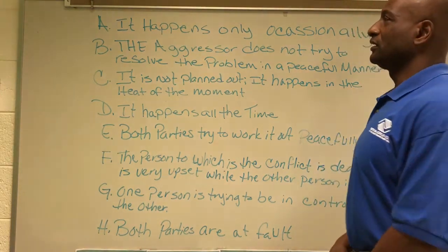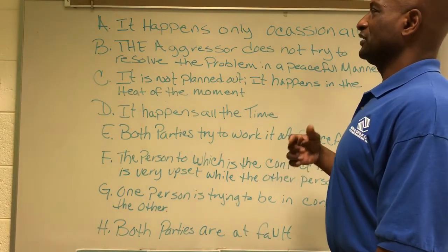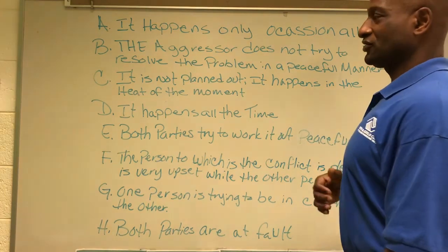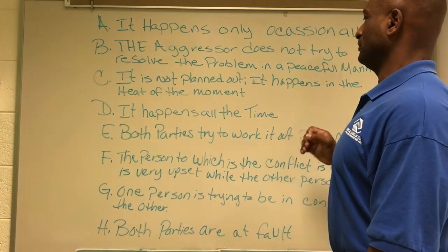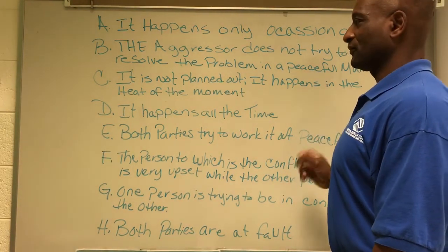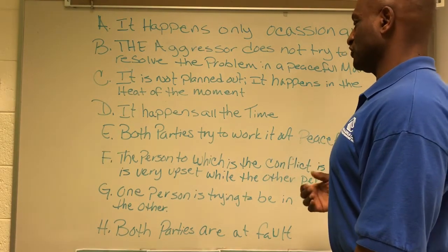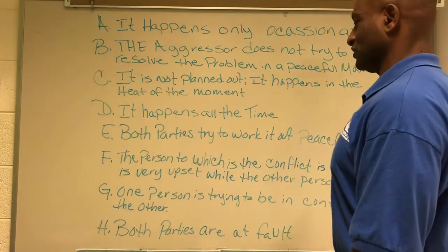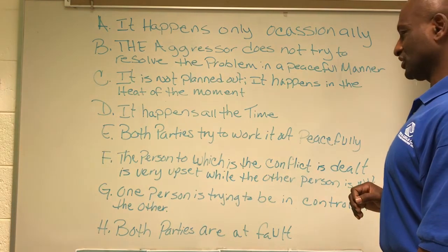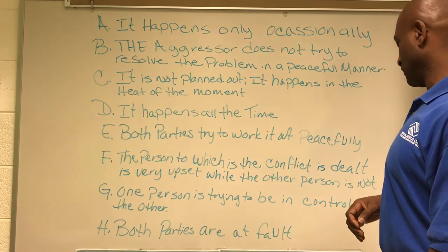So, real quick: A — it happens only occasionally. B — the aggressor does not try to resolve the problem in a peaceful manner. C — it is not planned out; it happens in the heat of the moment. D — it happens all the time. E — both parties try to work it out peacefully. F — the person to which the conflict is dealt is very upset while the other person is not.